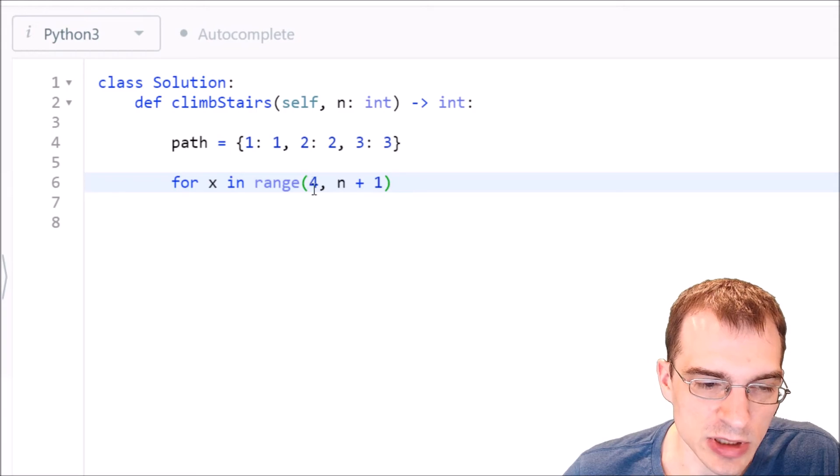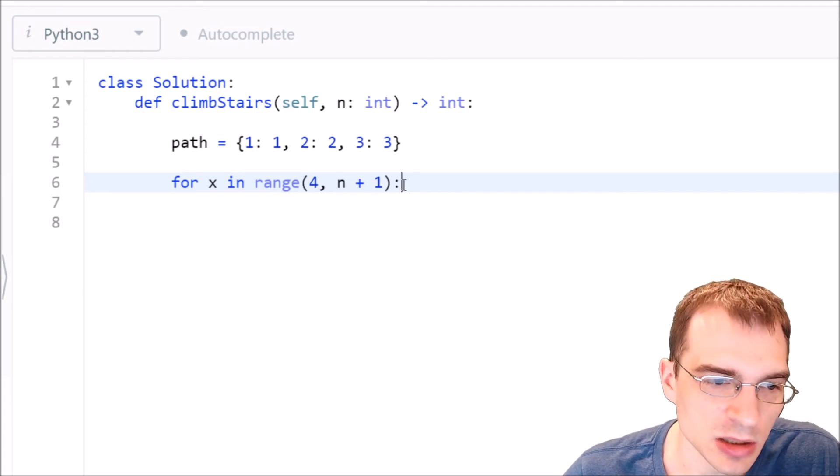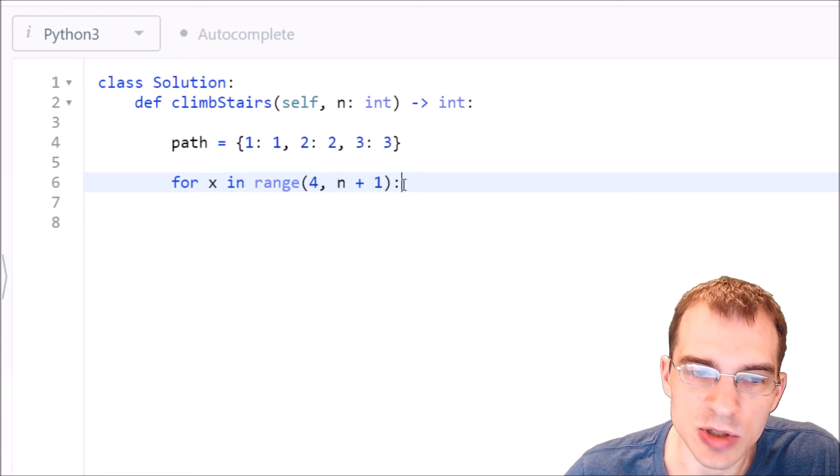So we're going if we see a staircase that's four or longer, we'll take steps all the way up to the length of the staircase. And for each of those steps, we'll calculate how many possibilities there are to get to the top of it based on the values of the two previous ones that will be stored in our dictionary.